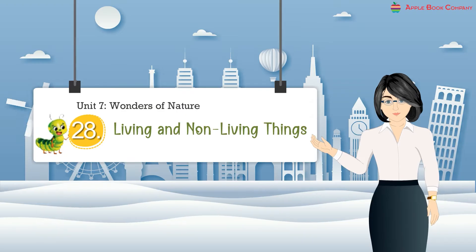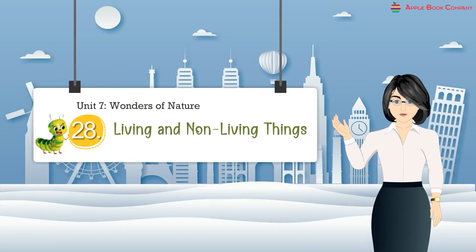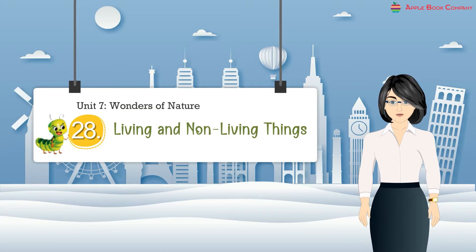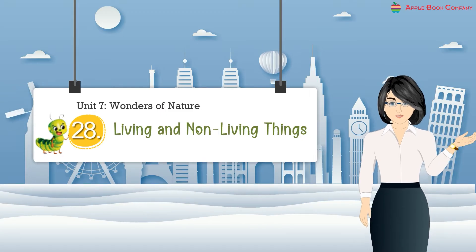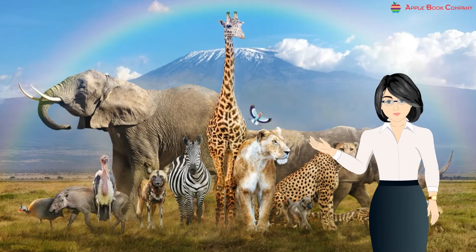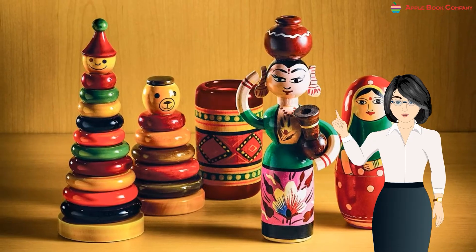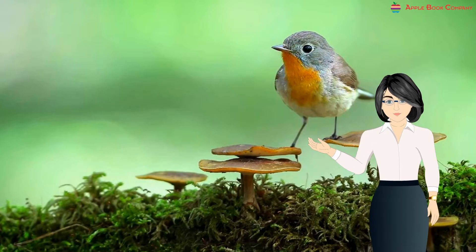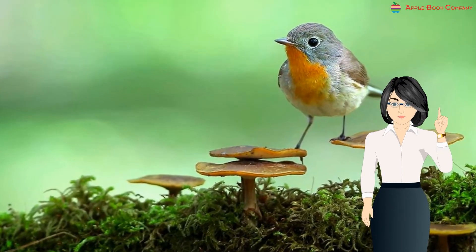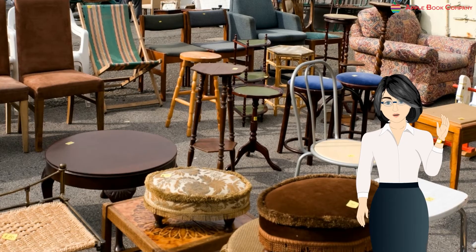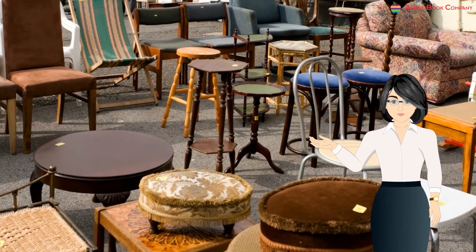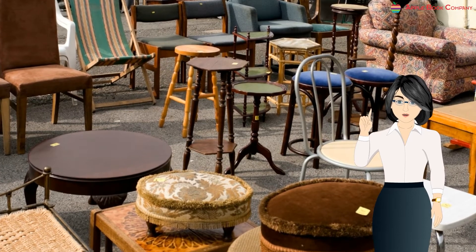Chapter 28: Living and Non-Living Things. Hello students, I hope you are fit and fine. Today we are going to discuss living and non-living things. Living things are things that have life, while non-living things do not. Living things can move, grow, reproduce, and respond to stimuli. Non-living things do not have these characteristics.